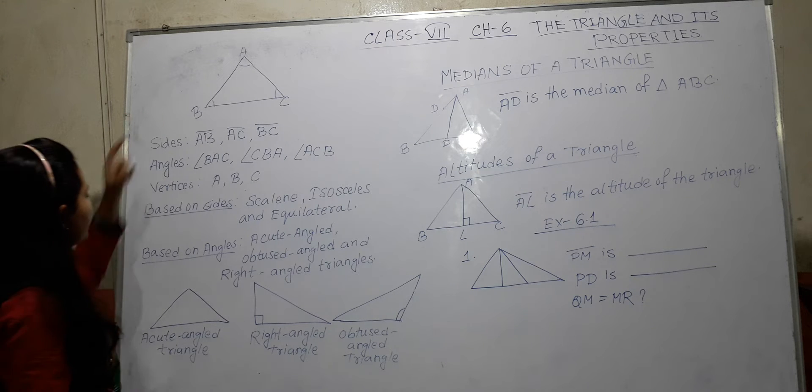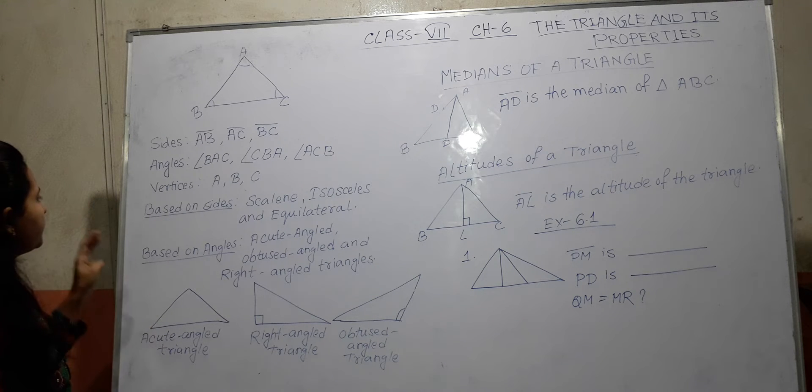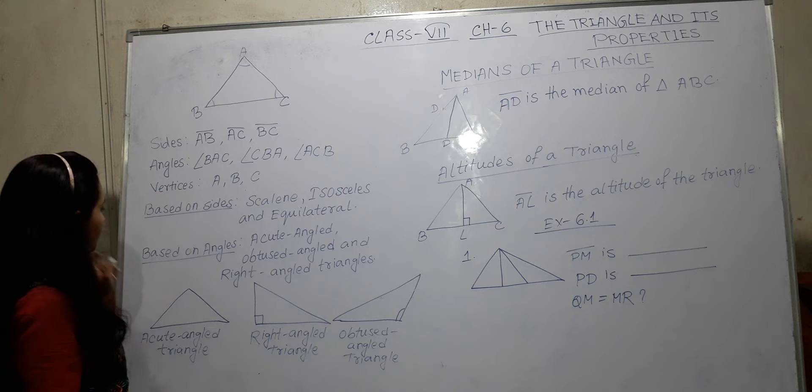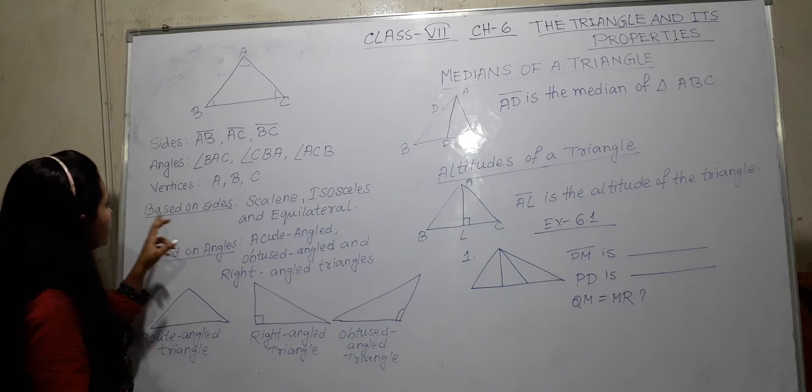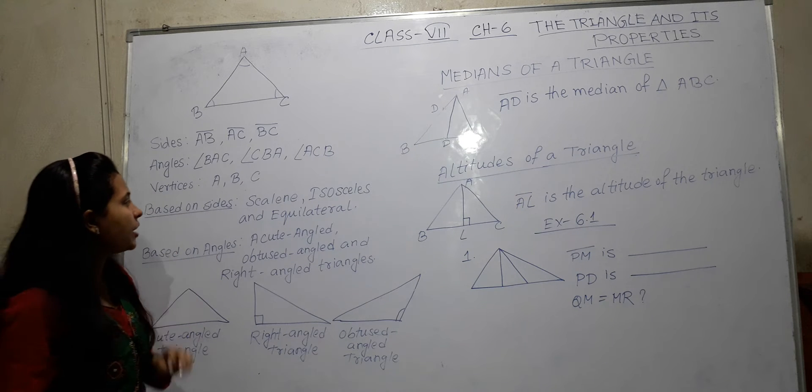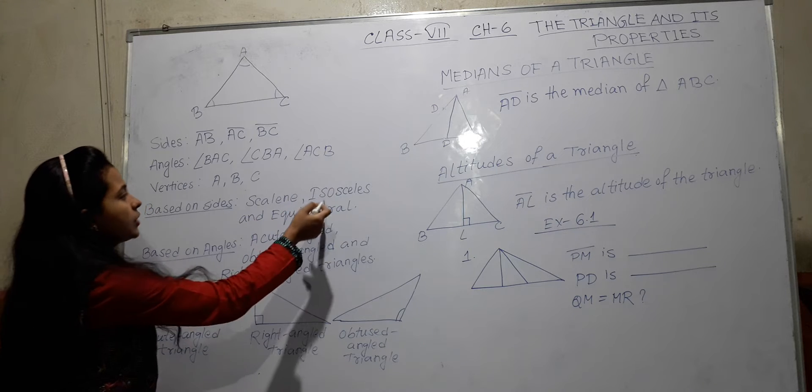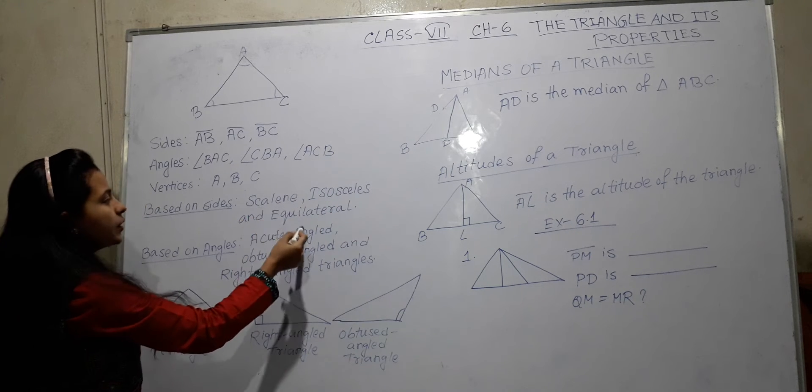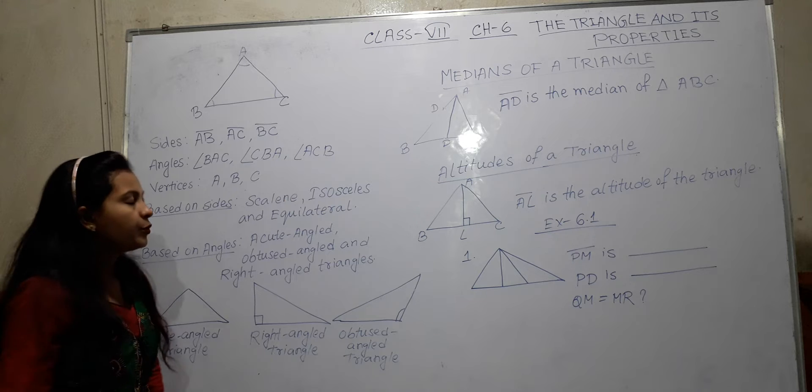Now we can divide triangles based on sides and based on angles. Based on sides, triangle is 3 types: Scalene triangle, Isosceles triangle and Equilateral triangle. We know.